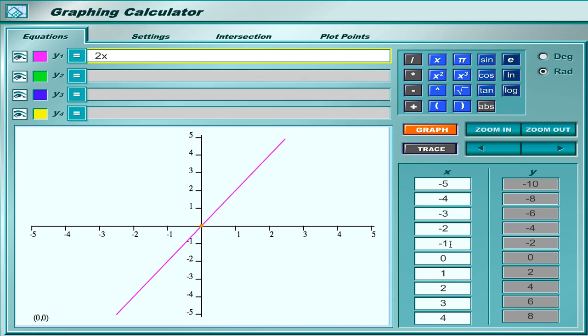And if I look at negative 1, if I were to trace down to where x is negative 1, y should be negative 2. So if I trace down, x is negative 1, y is negative 2. You see the ordered pair down here, or you could see it from the point right here.